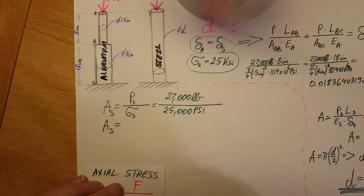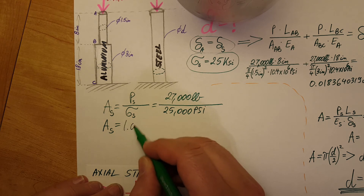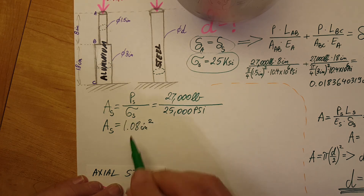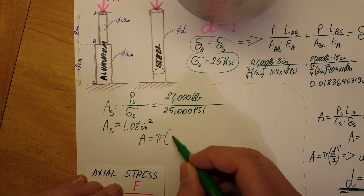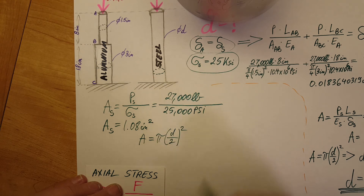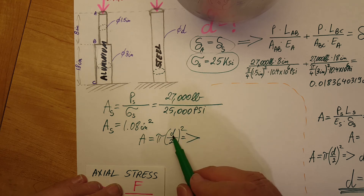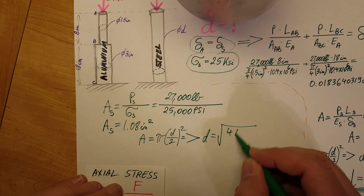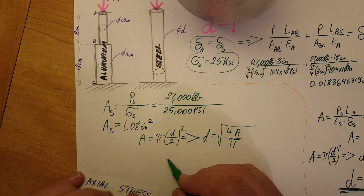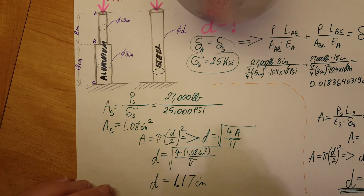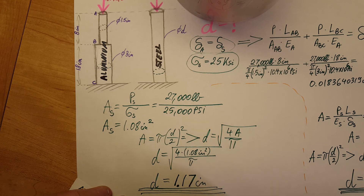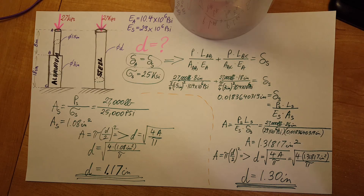Plugging in 27 kips divided by 25 ksi gives an area of 1.08 inches squared for the steel. Converting to diameter using the same circular cross-section formula — d equals square root of 4A over pi — gives a diameter of 1.17 inches.